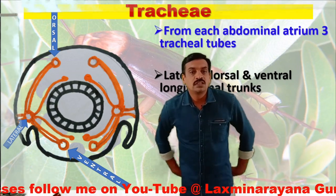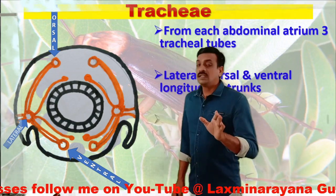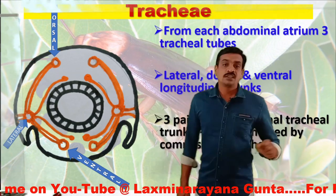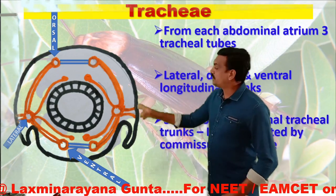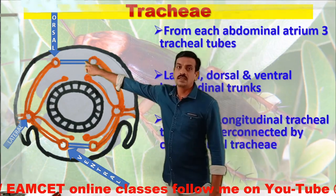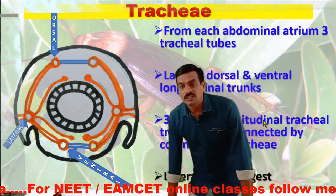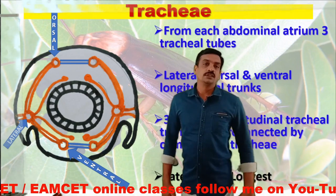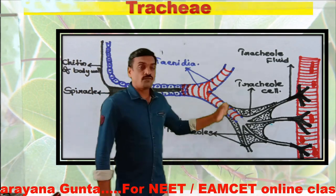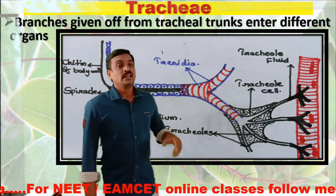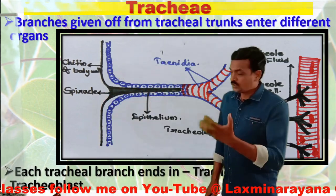On the dorsal side there are two dorsal longitudinal trunks. These three sets of longitudinal tracheal trunks are interconnected by commissural trachea. The lateral longitudinal tracheal trunks are the longest ones. The branches given off from these longitudinal tracheal trunks enter different organs and supply oxygen to those organs.